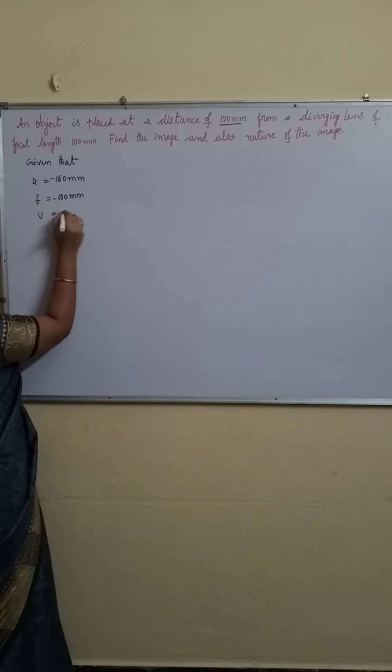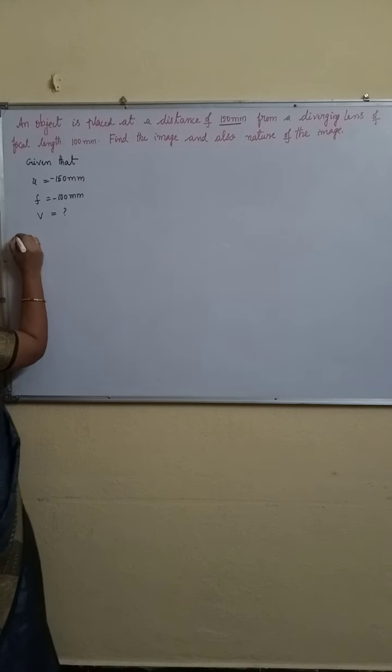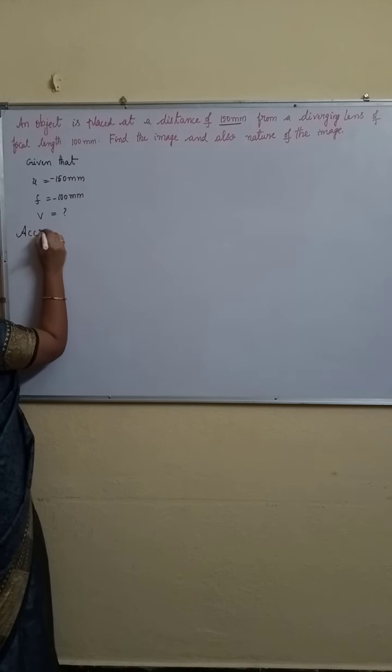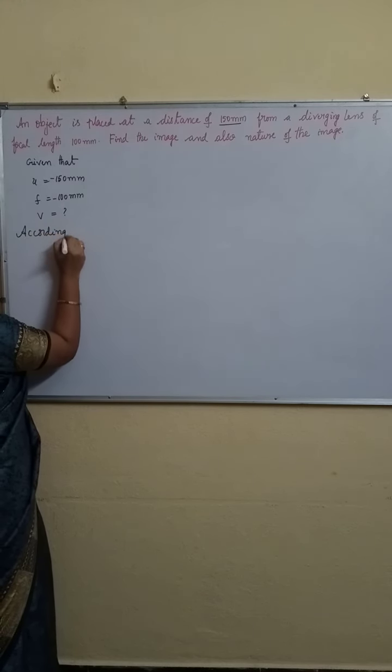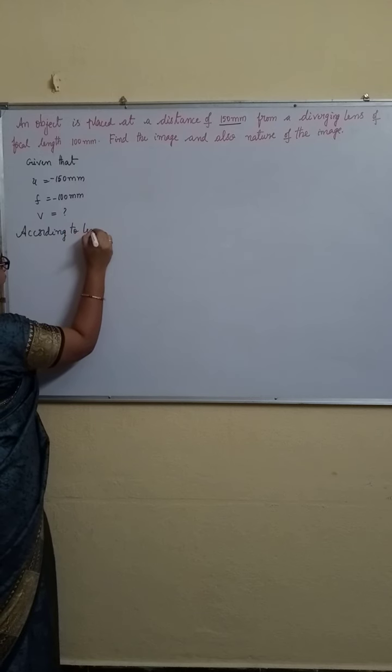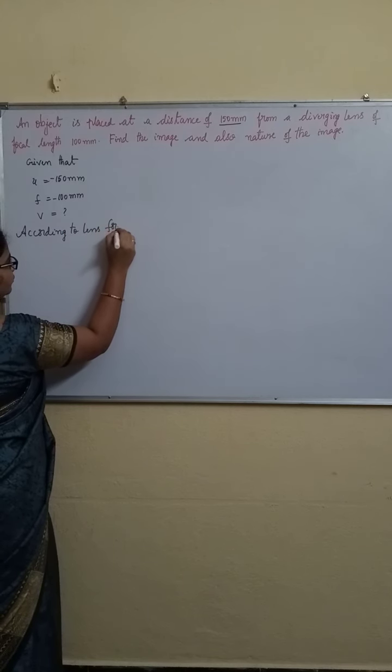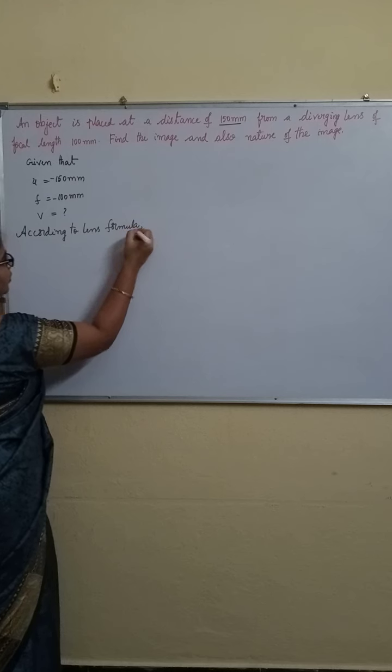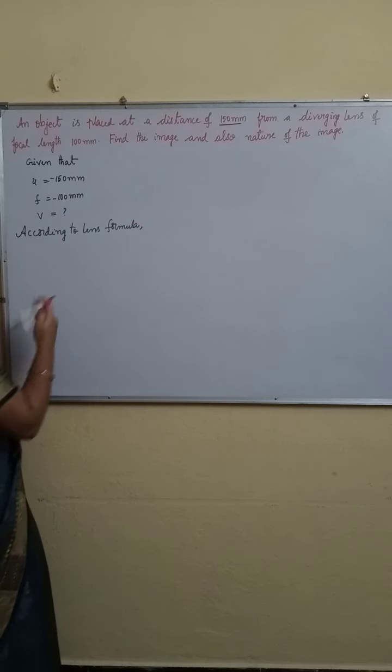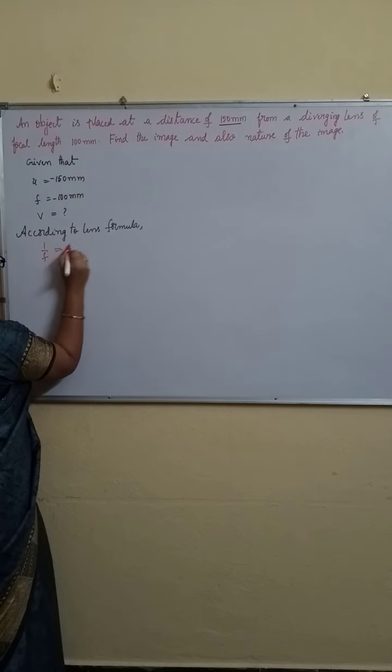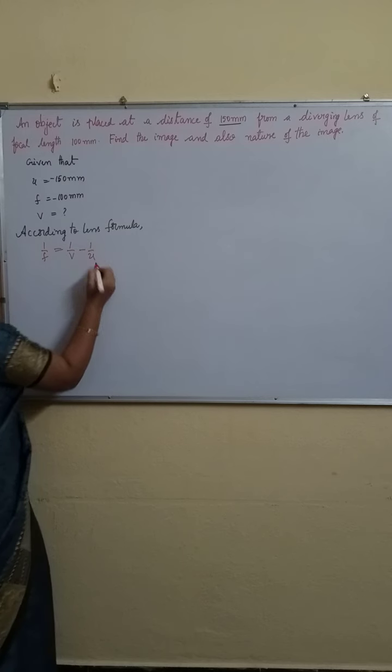Now we have to find out the image distance. So according to lens formula, what is the lens formula? 1 by F is equal to 1 by V minus 1 by U. Now when we substitute all the values into the formula, we will get the image distance.